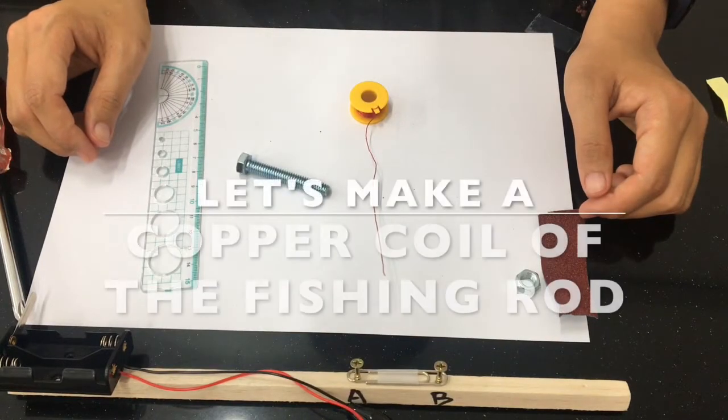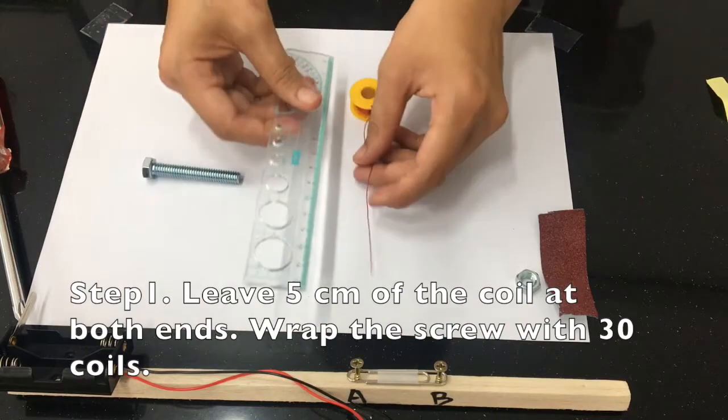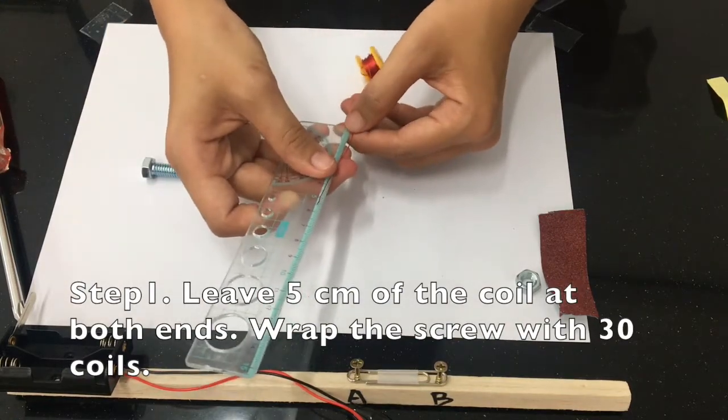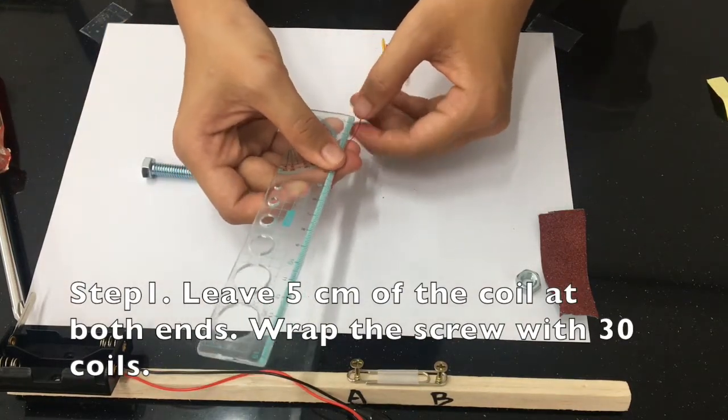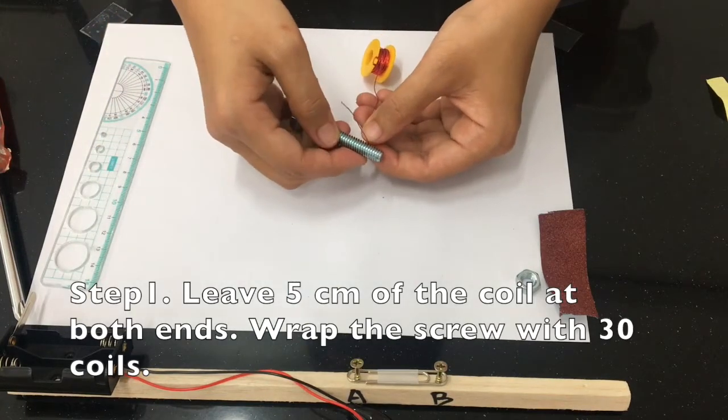Let's make a copper coil of the fishing rod. Step 1: Leave 5 centimeters of the coil at both ends. Wrap the screw with 30 coils.